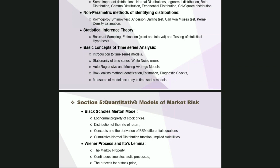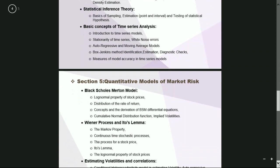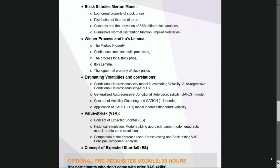After creating the basics for time series analysis, the next part is the Black-Scholes-Merton model and quantitative models of market risk. We will discuss the landmark Black-Scholes-Merton model, the log-normal property of stock prices, Wiener processes and Ito's Lemma, the Markov property and Markov processes. From there, we graduate to estimating volatilities and correlations, value at risk models, the concept of expected shortfall, and finally the economic capital concept.